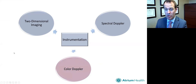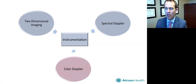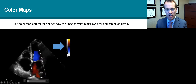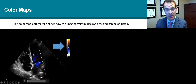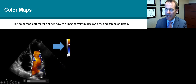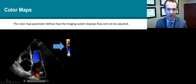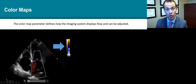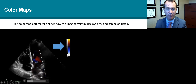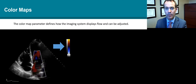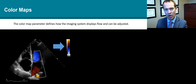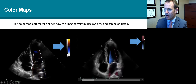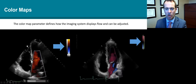Moving on to color Doppler, we use this to measure blood flow characteristics: the timing, the direction, the velocity, and turbulence. On the color map, black represents no flow. As flow goes towards the probe, low flow is a darker red color and increases to bright yellow at higher velocity. As flow goes away from the probe, darker flow is blue, increasing toward white. Turbulent flow causes a mosaic color pattern, and you can also use variance which gives a green-yellow color for turbulent flow.